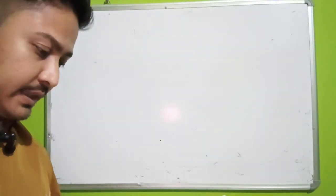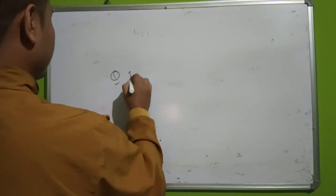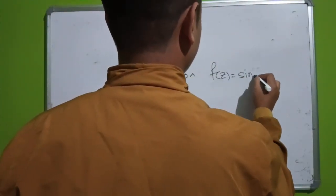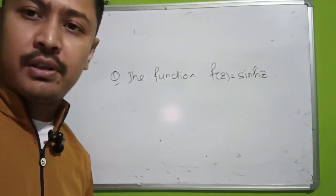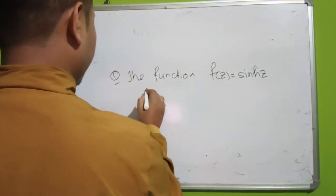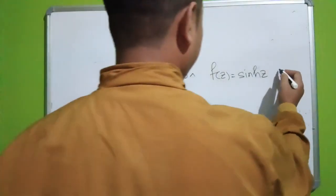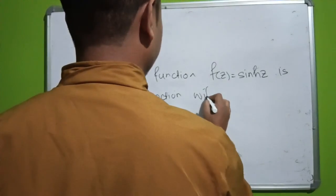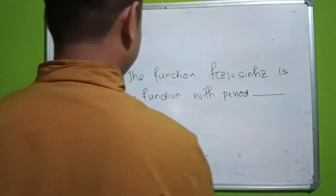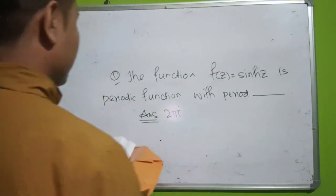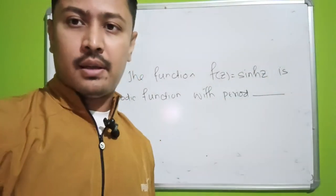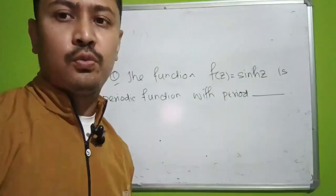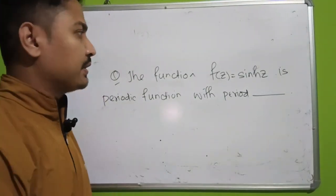Next problem: the hyperbolic function. The function f(z) = sinh(z) is a hyperbolic function and it is also a periodic function. What is its period? The answer is 2πi. Similarly, cosh(z) also has period 2πi. So both hyperbolic functions sinh and cosh have period 2πi.